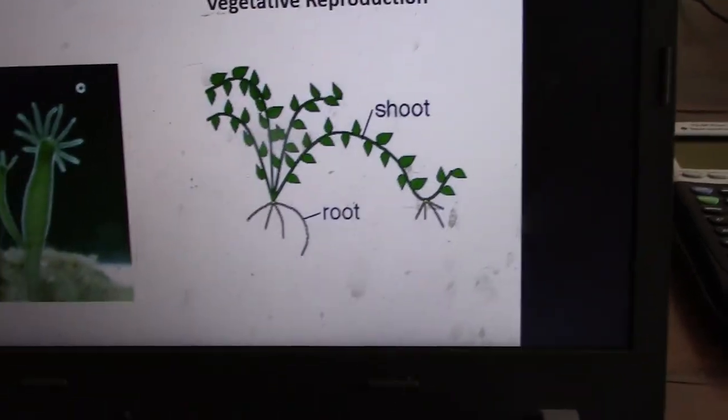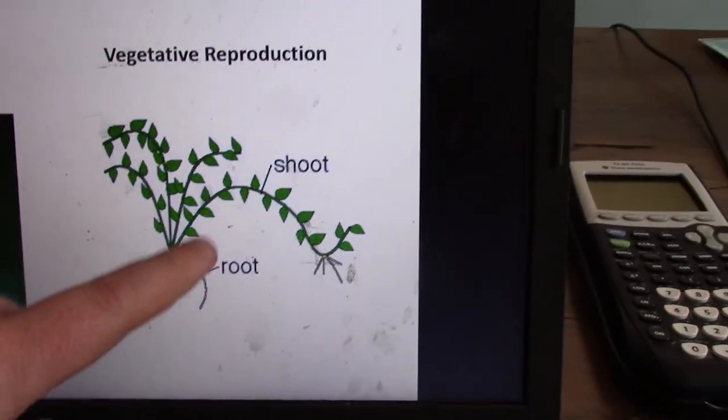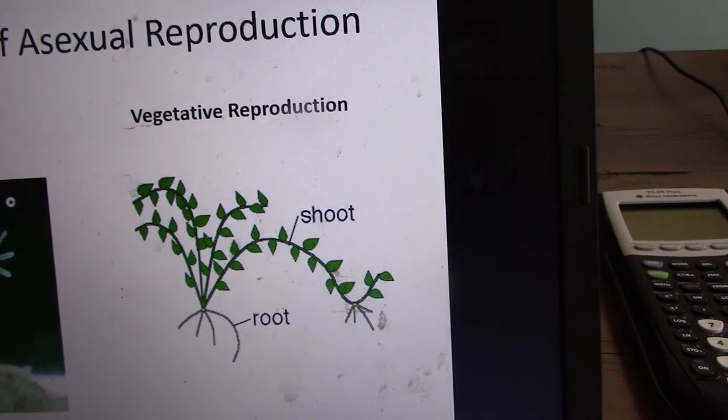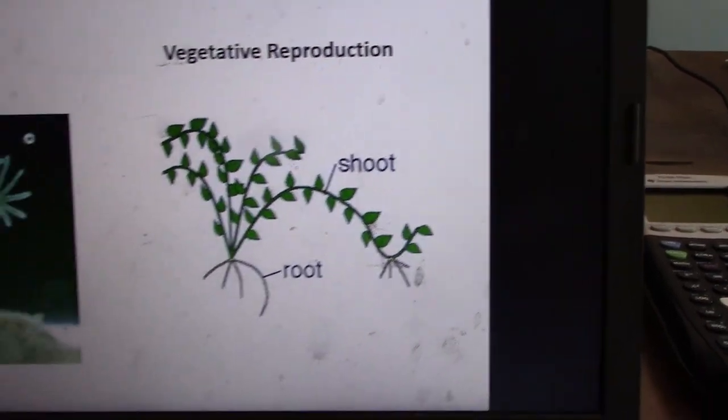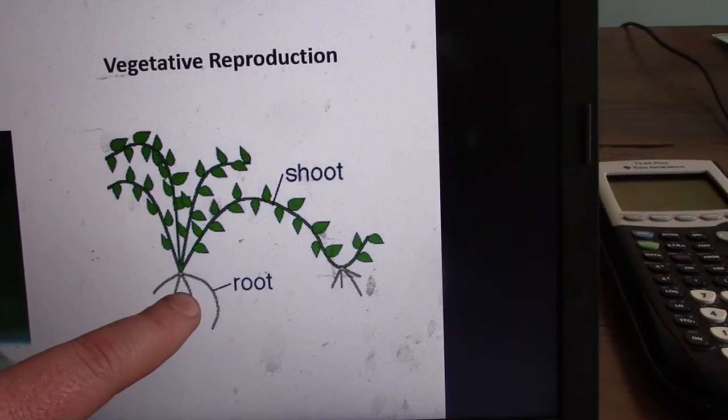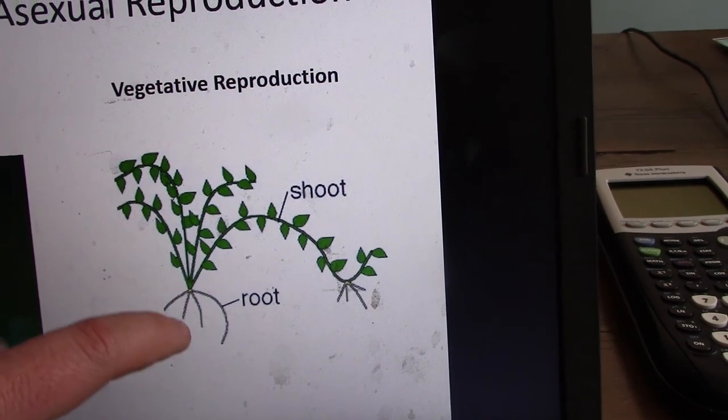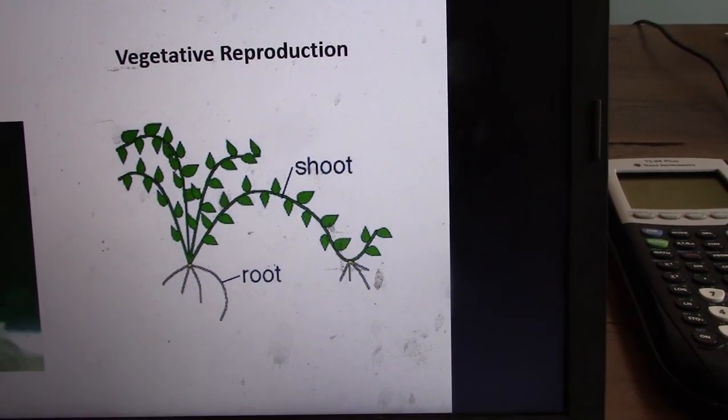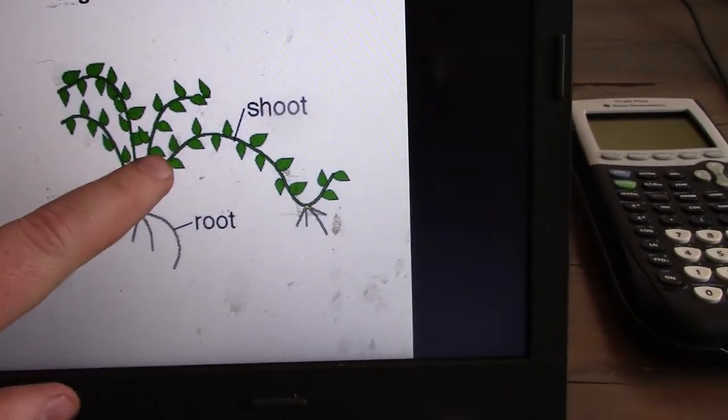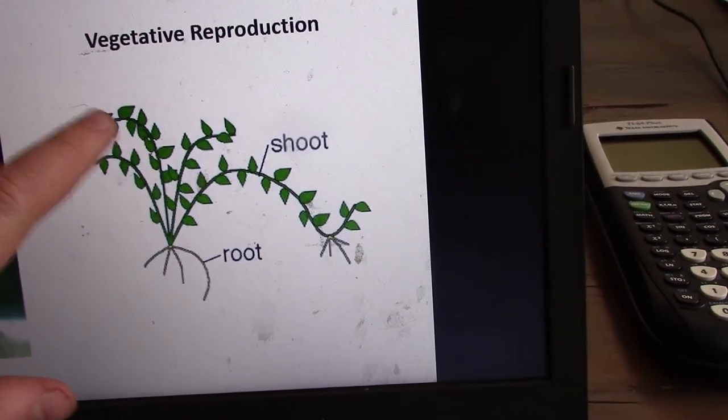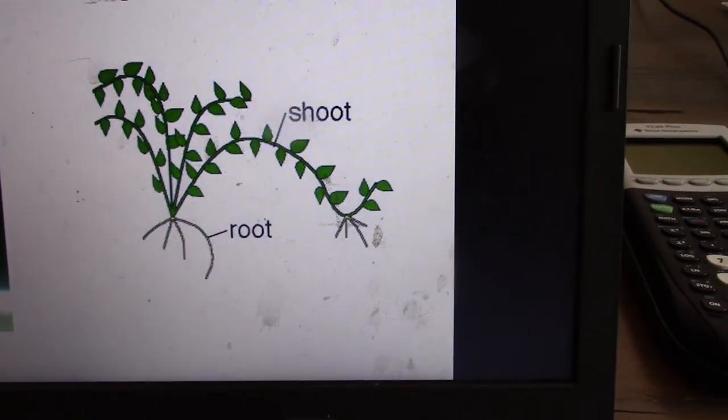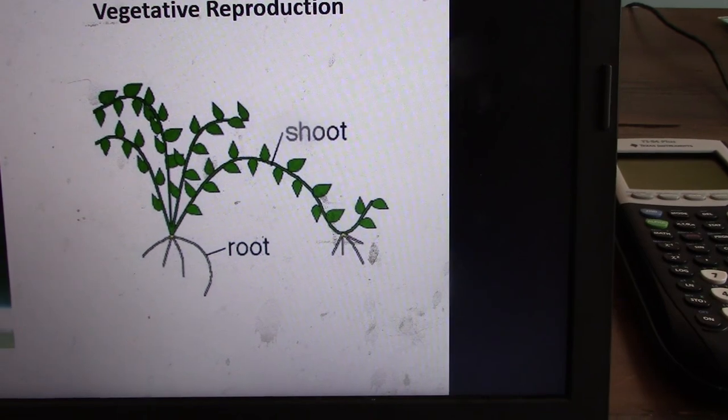In vegetative reproduction, there's two types of reproductive parts. There's the roots, which generally come from male or female plants. And the shoots are clones that come off the male or female parent. The shoot can develop into a new tree or plant.